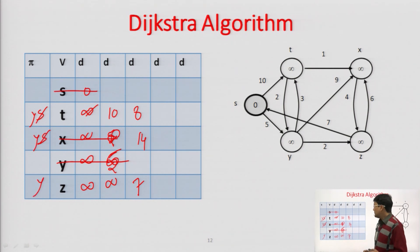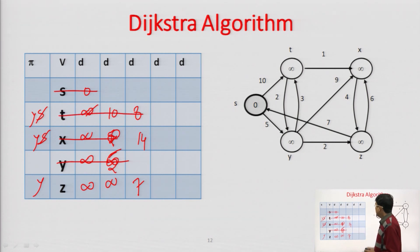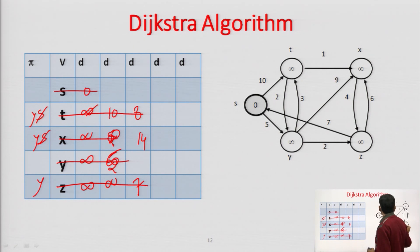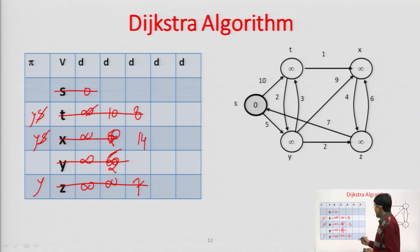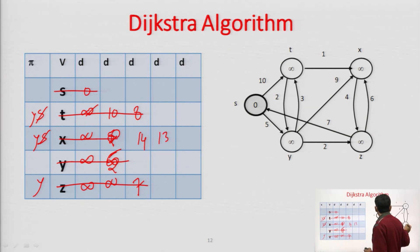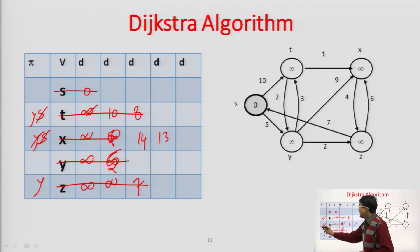All these predecessors have been changed to Y, and then we delete Z, which is the minimum with cost 7. From Z, there is a path toward S which we cannot update since S is already deleted, and Z to X: X was 14, now going via Z costs 7 plus 6 = 13, so X updates to 13 and its predecessor updates to Z.